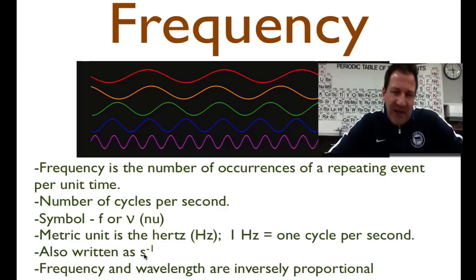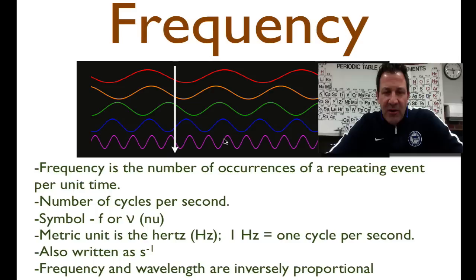Okay? And as we mentioned earlier, frequency and wavelength are inversely proportional. You can see these are long red waves. These are short violet waves, and as you move down this graph, this picture, you'll notice that the wavelength is decreasing.